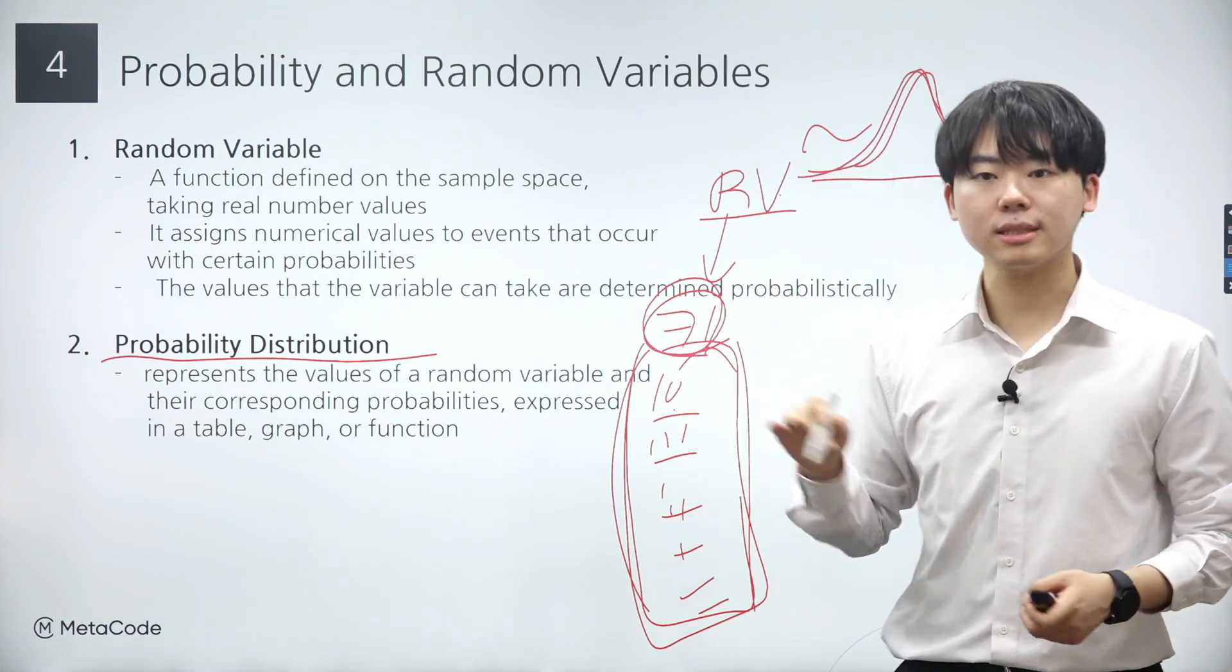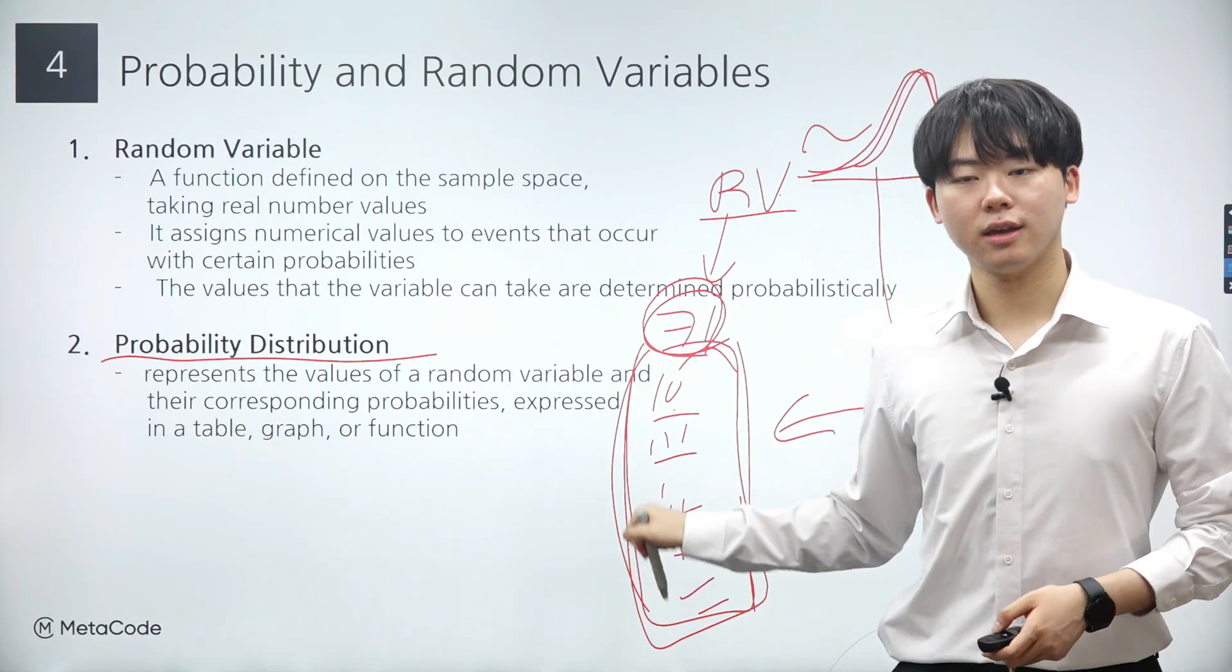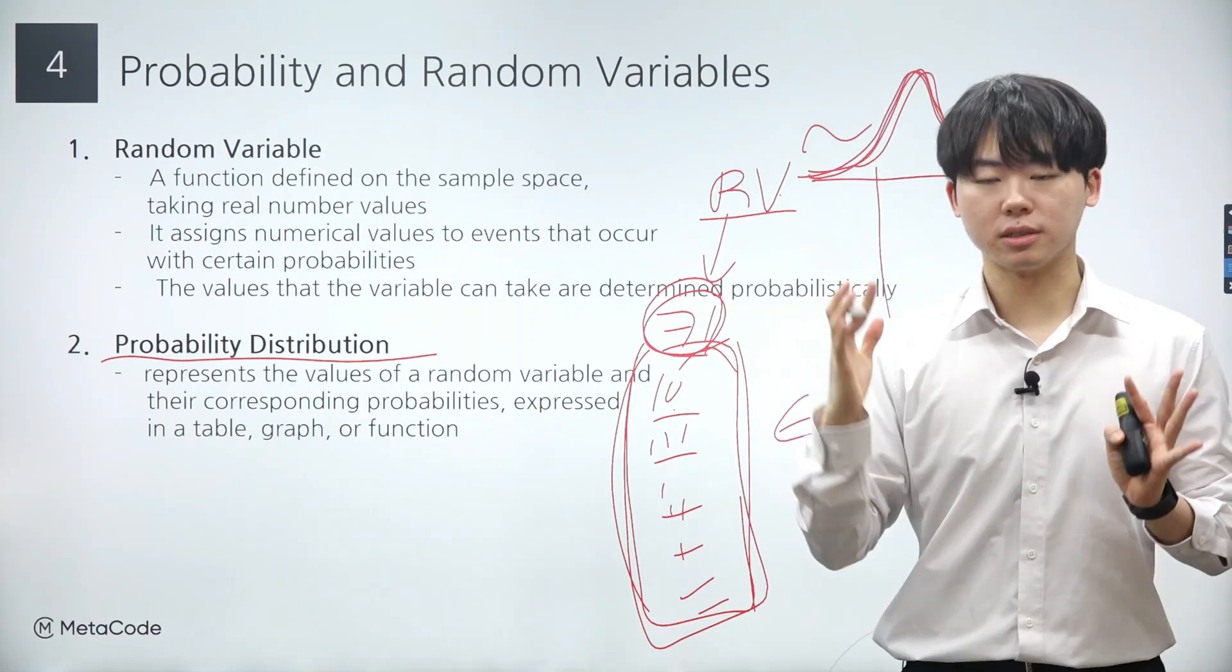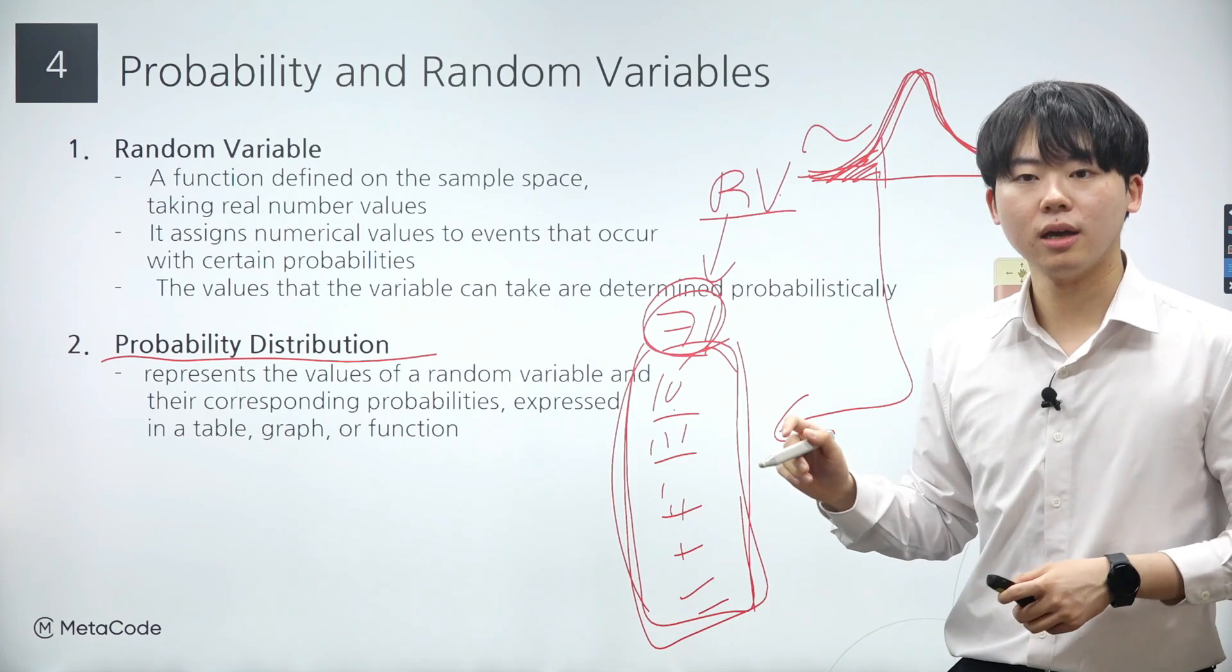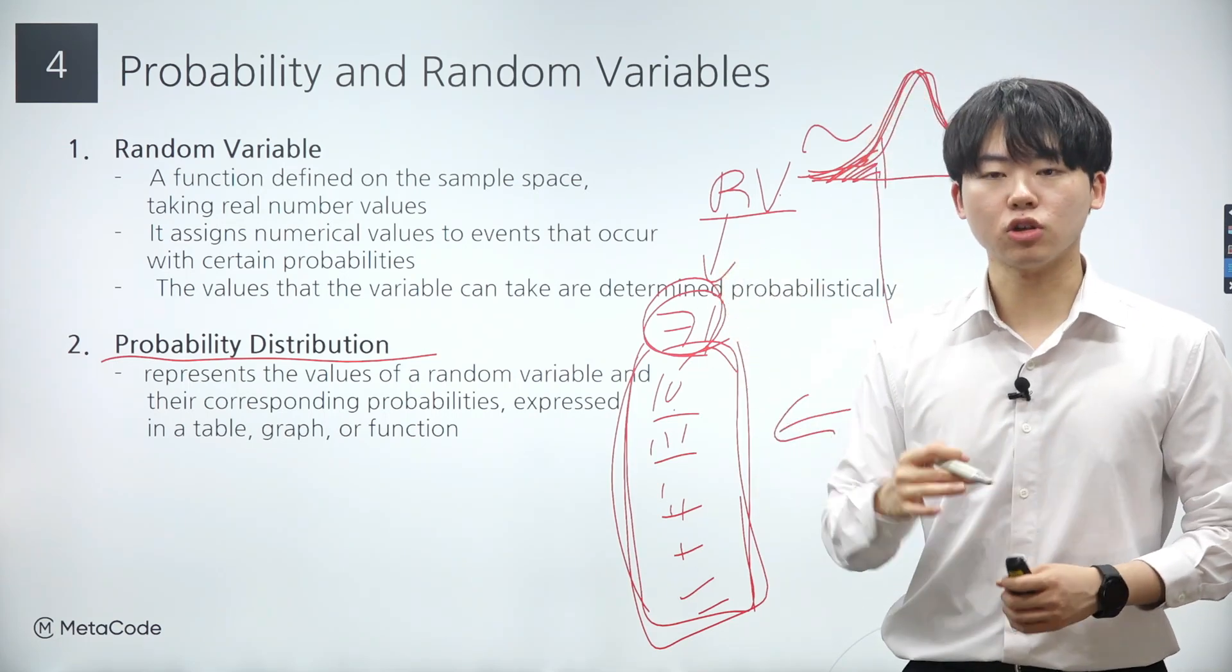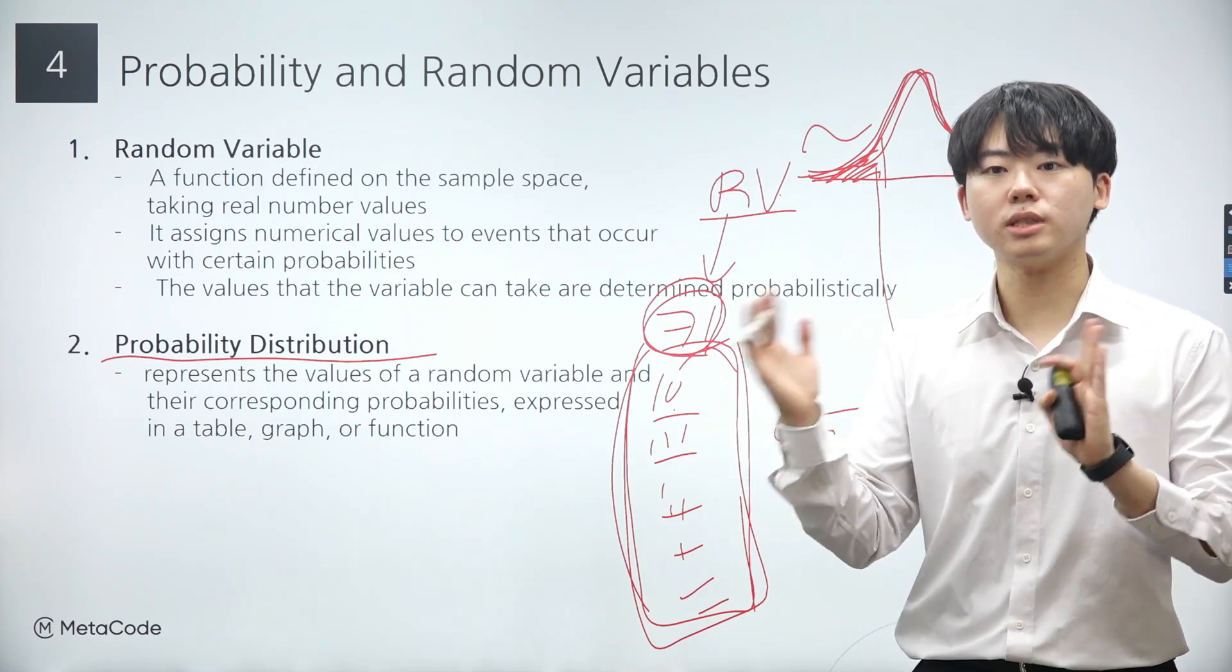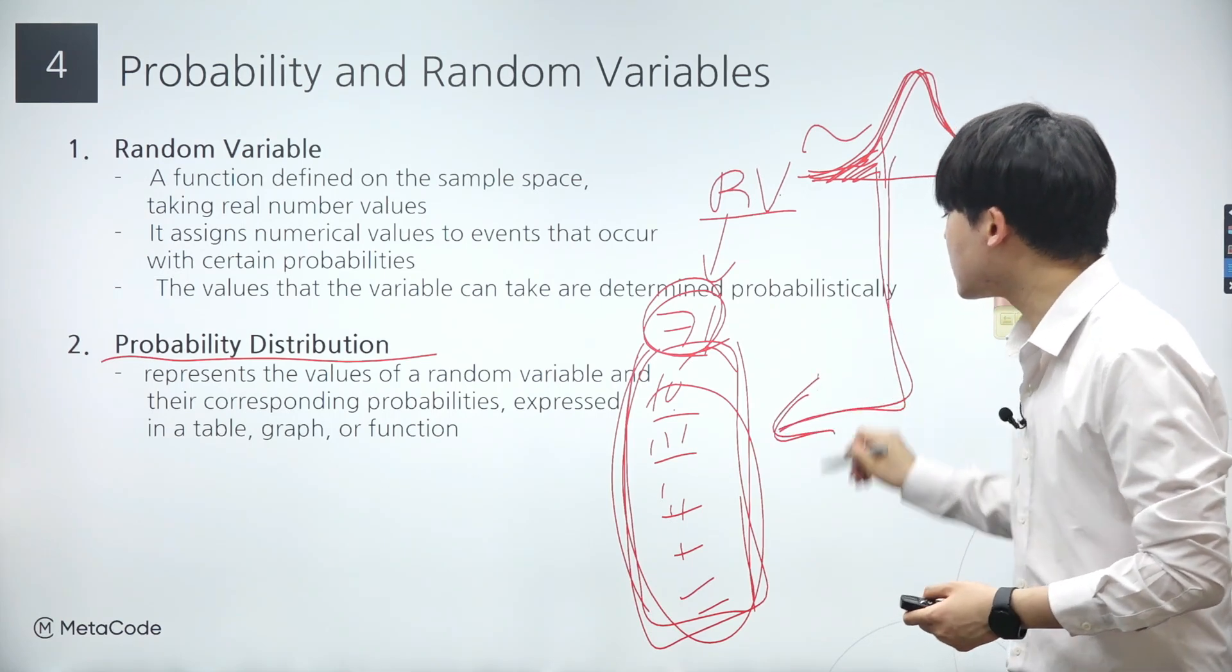By doing so, we can effectively leverage the properties and patterns inherent in the probability distribution to conduct a more insightful analysis of the dataset. The characteristics of the distribution can encompass various factors, such as the area under the curve, mean, or variance. When we analyze the original dataset, we can leverage these properties derived from the distribution.